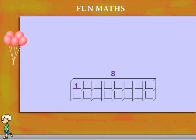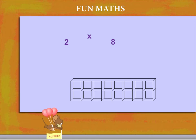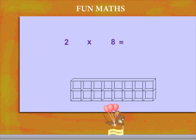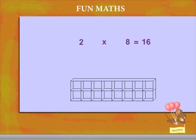From top to bottom it is 1 and 2. So, we have 2 rows of 8 cubes. 2 into 8 is equal to 16.